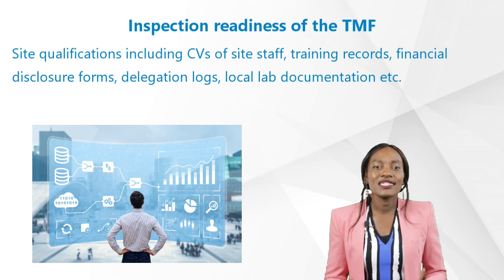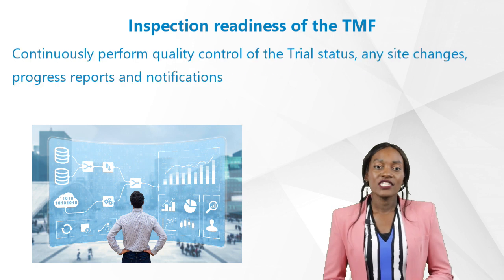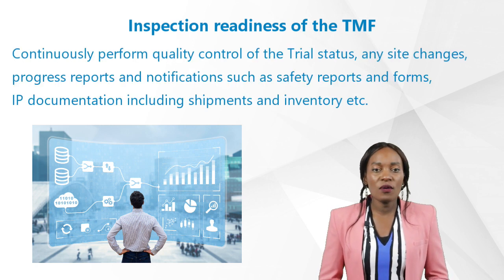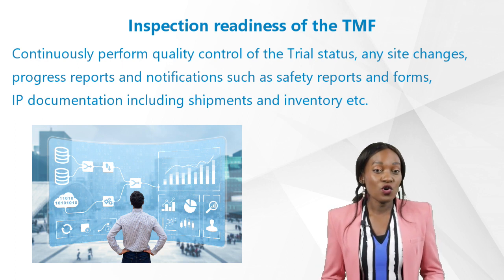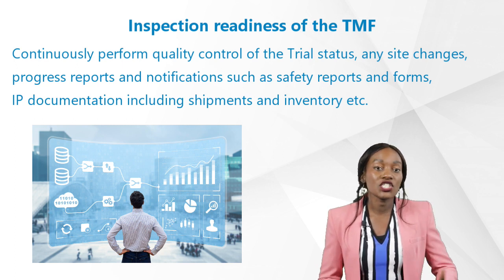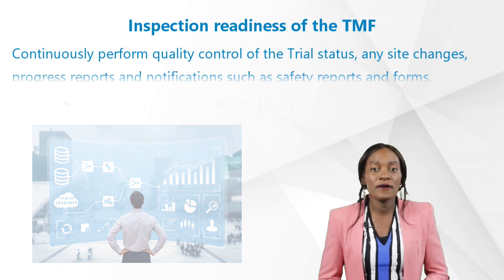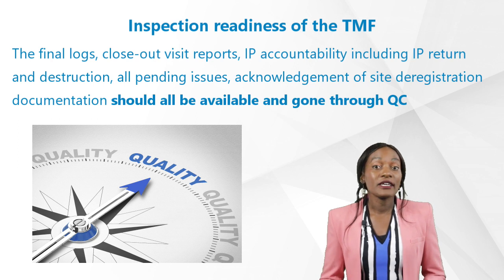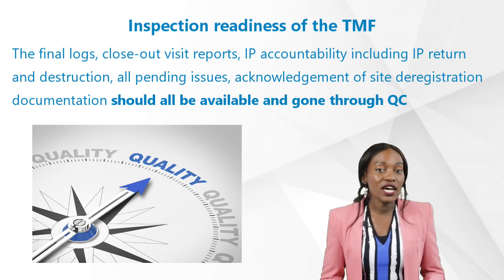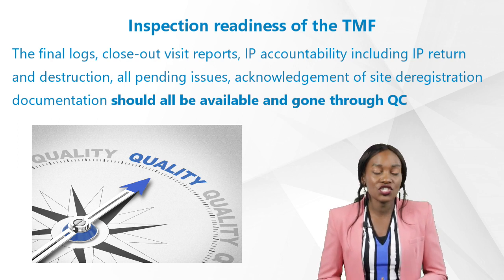After the SIV, documents such as site qualifications including CVs of site staff, training records, financial disclosure forms, delegation logs, and local lab documentation should be QC'd. During the active phase it's important to continuously perform quality control of the trial status, any site changes, progress reports, notifications such as safety reports and forms, and IP documentation including shipment inventory. During closeout, the final logs, closeout visit reports, IP accountability including IP return and destruction, all pending issues, acknowledgement of site deregistration documentation should all be available and have gone through quality control.